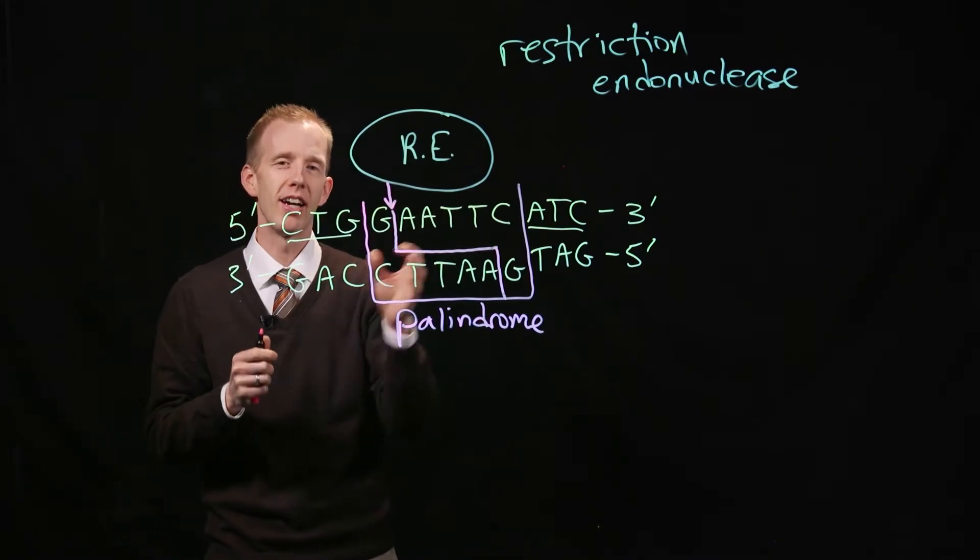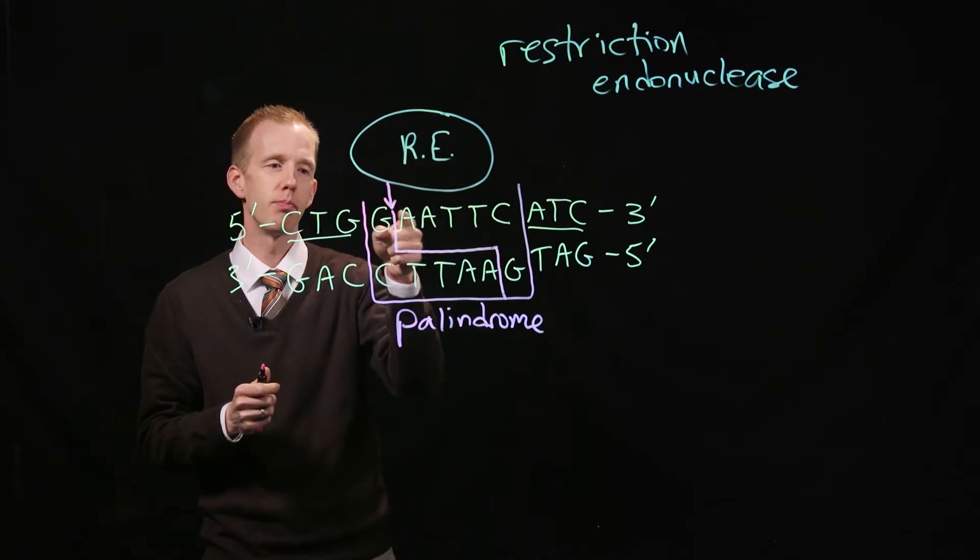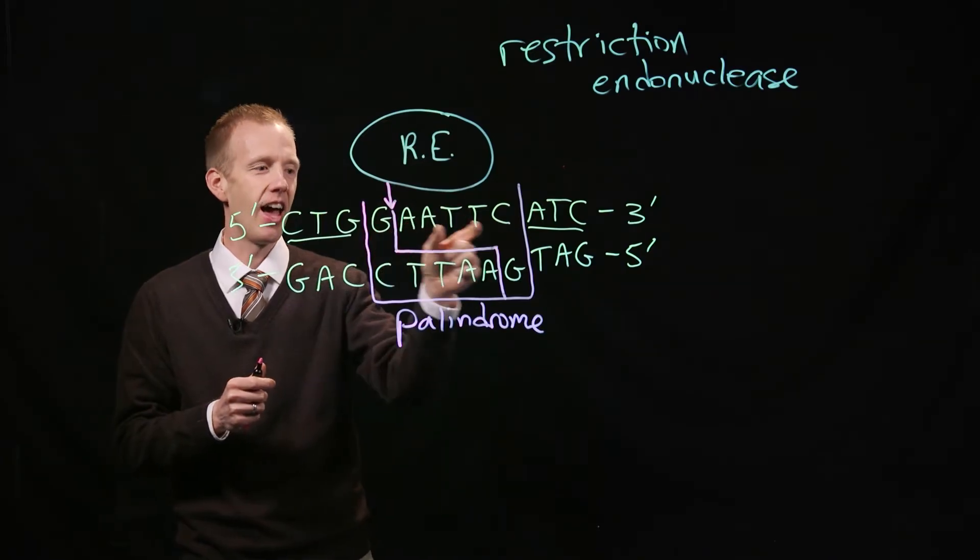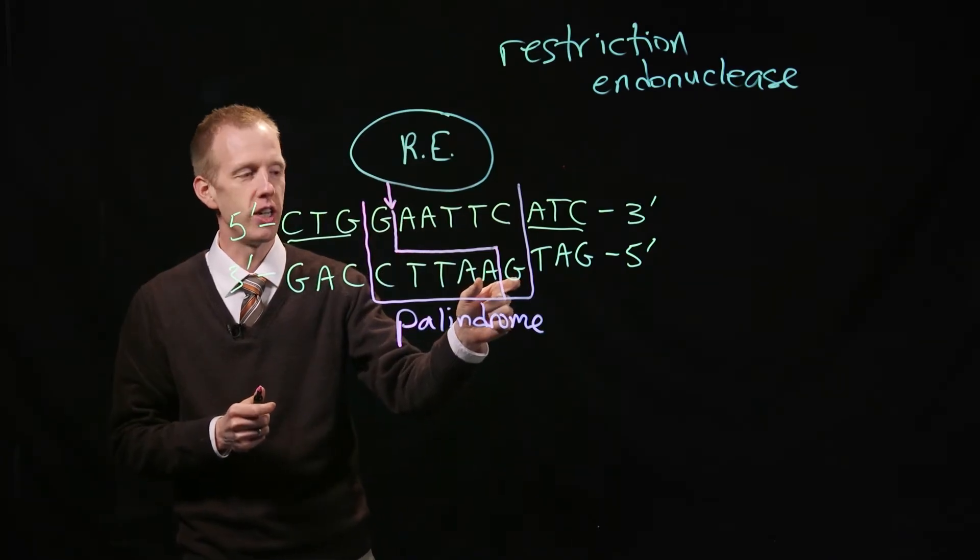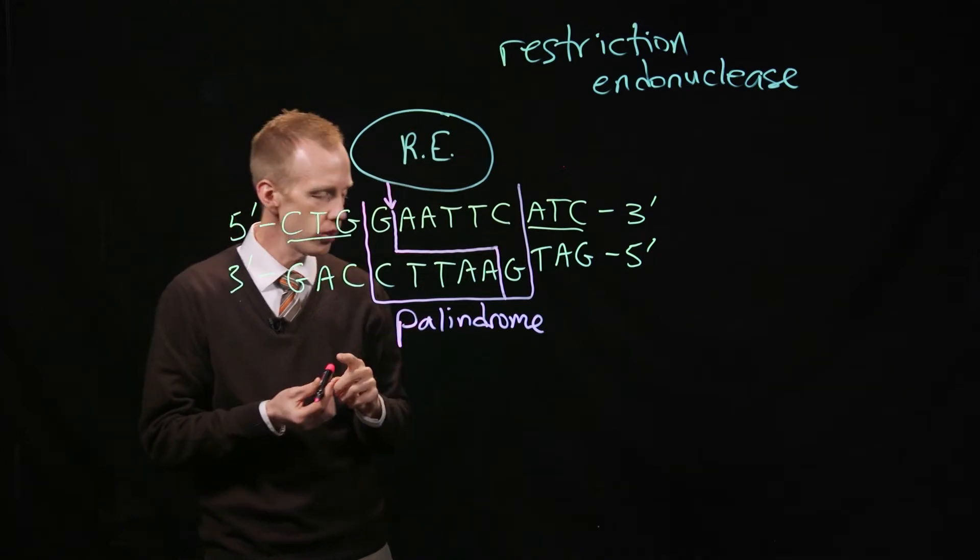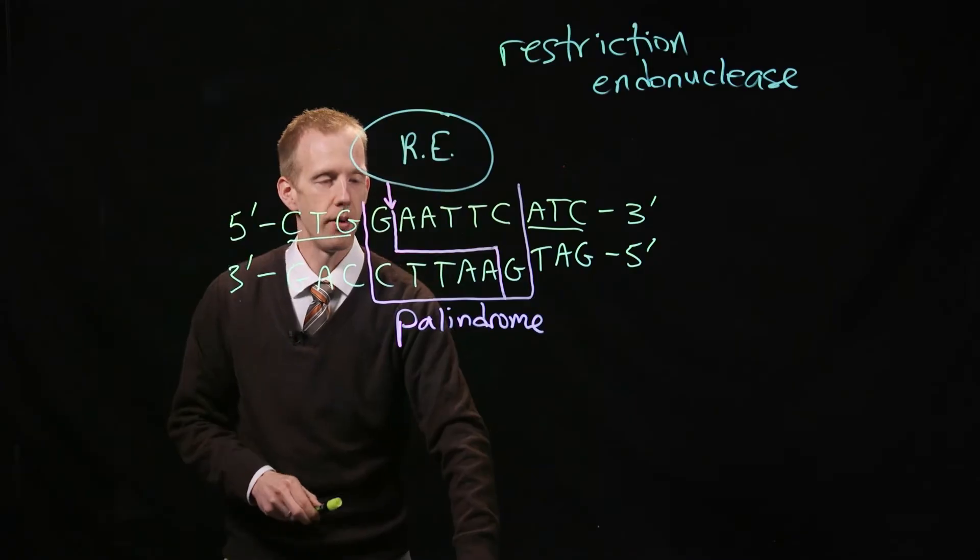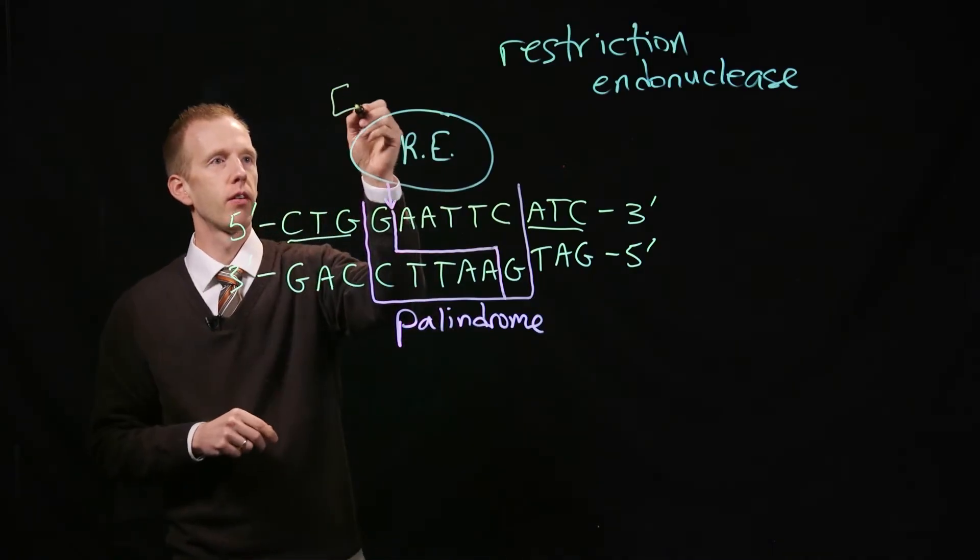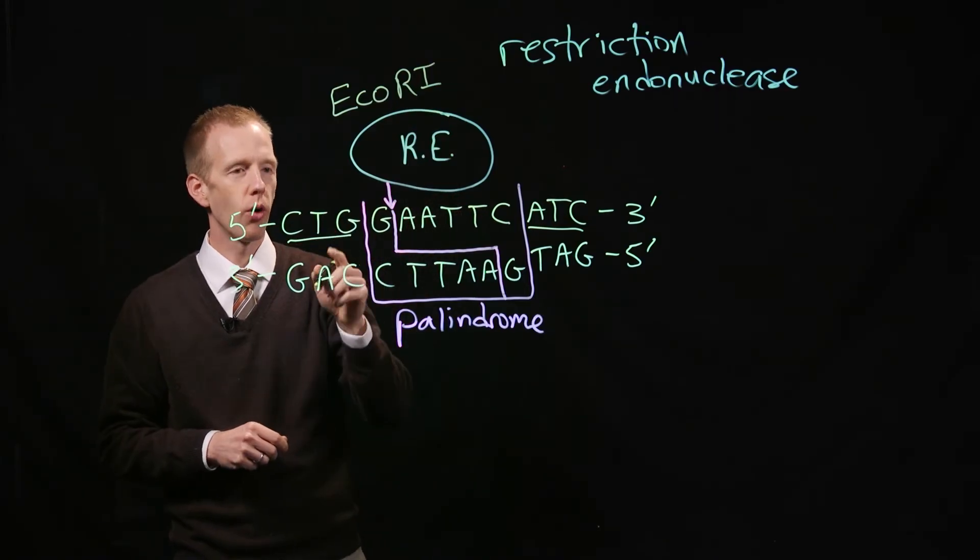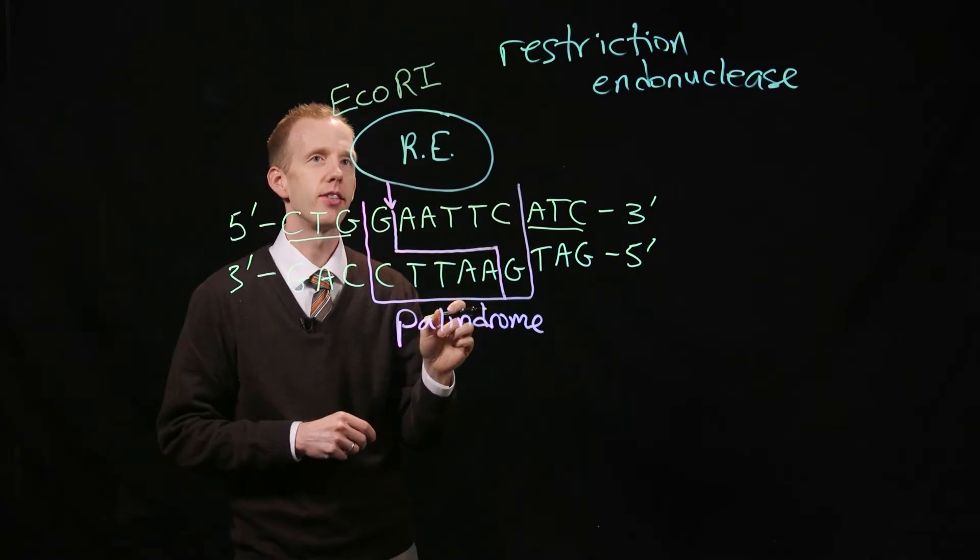Most restriction enzymes recognize palindromic sequences of some sort. You'll notice that when it cuts both strands of the DNA, it cuts between G and A, and it cuts between the same G and A on the opposite strand. This is a restriction enzyme called EcoR1.